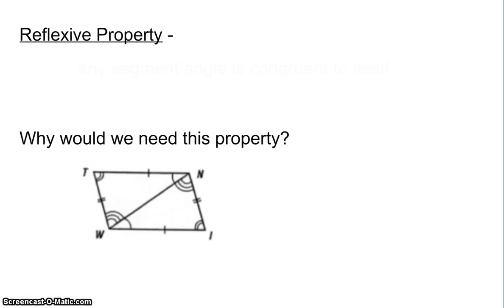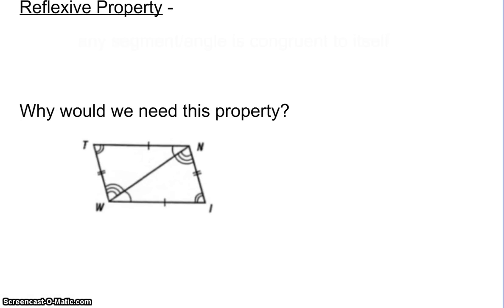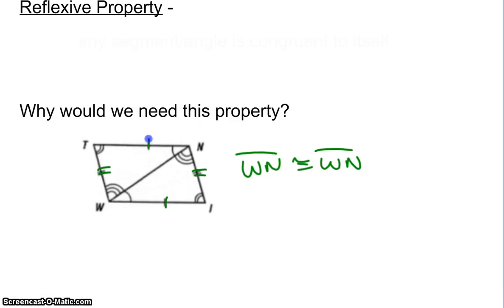In this diagram here, we have one pair of corresponding sides marked congruent, and a second pair of corresponding sides marked congruent, but we don't have a third side. When we start talking about the triangles, we'll say that WN is congruent to WN, and that would be our third pair of corresponding sides.